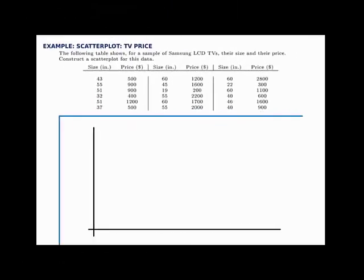In this example, we'll construct a scatter plot for some data — the sizes of several TVs and the price that goes along with each one. The size is given in inches and the price in dollars, and we want to construct a scatter plot comparing these two variables. When constructing a scatter plot, we have to pick which variable will be X and which will be Y. Usually we want to think about how X determines Y — is there one variable that seems to control the other? We would say the size determines the price of the TV, so X is size and Y is price.